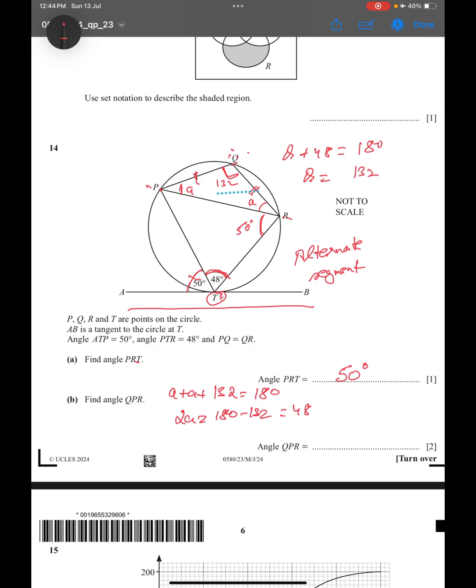So what is a? a is 48 by 2, that equals 24. So angle QPR is 24 degrees.